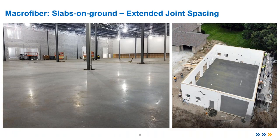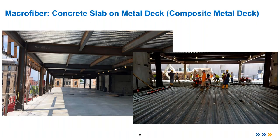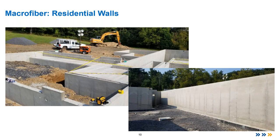Where are fibers being used? There's a huge amount of fiber use in slabs on ground — a very common application. When we talk about slabs on ground, we're including pavements, overlays, and sidewalks — all flat work sitting on the ground. This is an application where fibers have shown to perform better than traditional reinforcement, and they're much easier to build than using mesh or rebar, avoiding the need for chairs and tying steel.